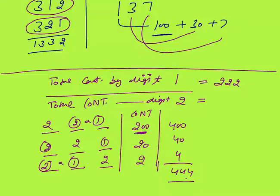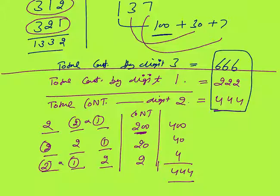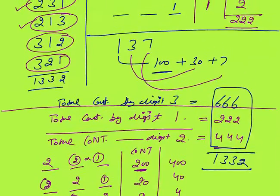Now you can see the pattern: when digit 1 had contribution 222, digit 2 has contribution 444. The value of the digit doubles, so the contribution also doubles. Can we find directly the contribution by digit 3? Digit 3 contribution would be 3 times that of digit 1, so 666. Adding all: 222 + 444 + 666 = 1332. The same answer as the manual calculation.